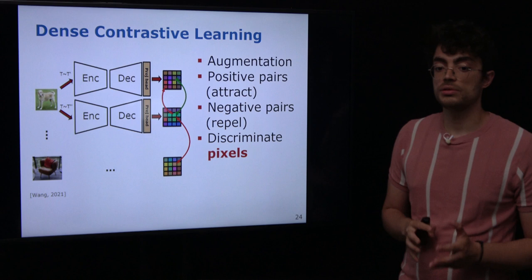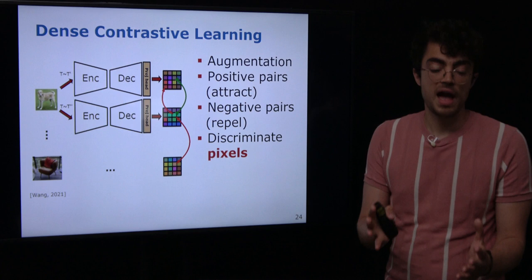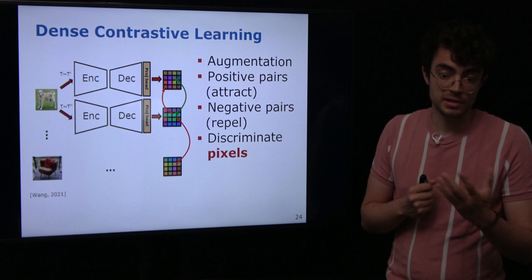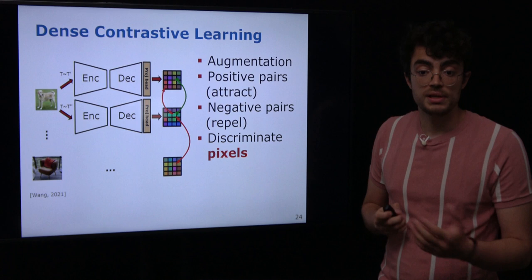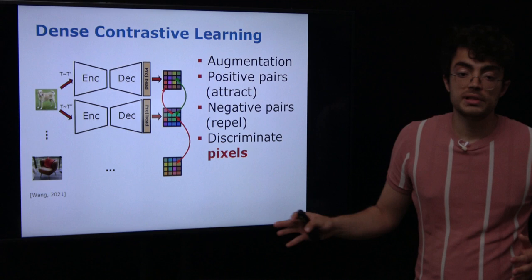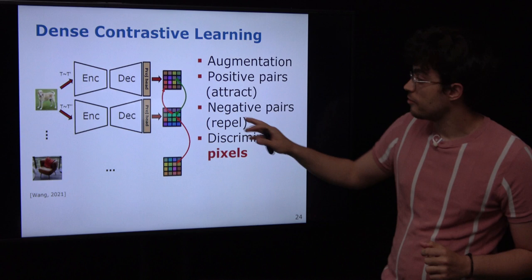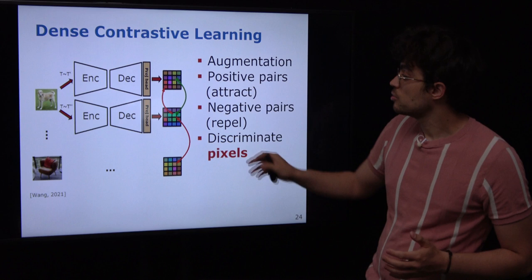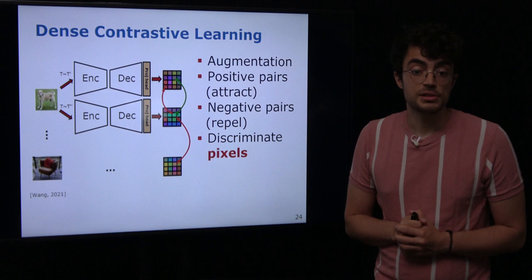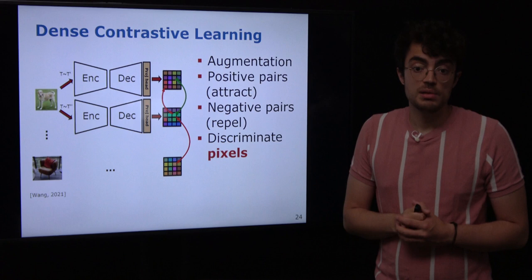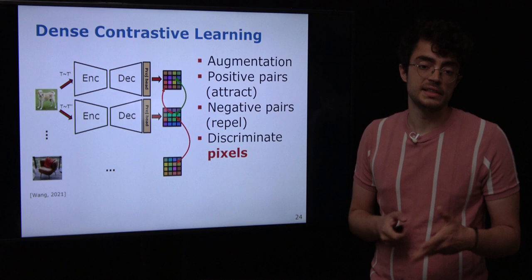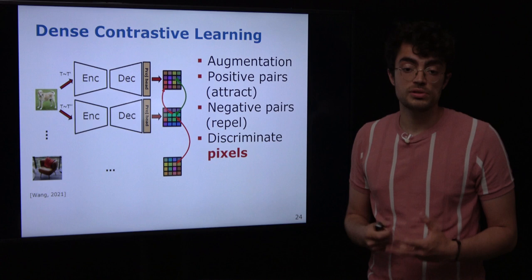If we think about dense prediction tasks such as semantic and panoptic segmentation, we want to use contrastive learning to train the model to extract pixel-wise information. Since we want to predict one label per pixel in the target task, we also want to learn meaningful representations at the pixel level during pre-training. We generate random data augmentation views of the same image, but in this case positive pairs are not representations for the whole image — they are corresponding pixels on both generated images. Negative pairs can be non-corresponding pixels of the same image as well as pixels of other images.